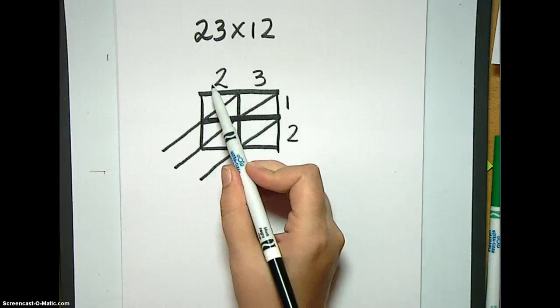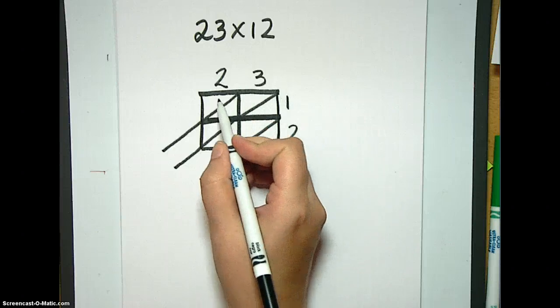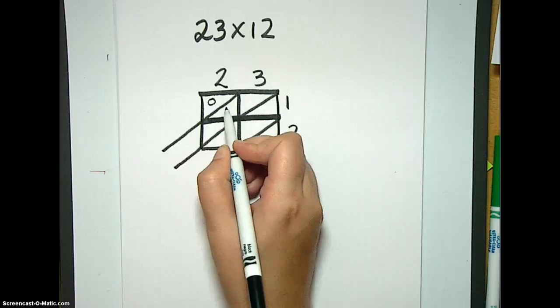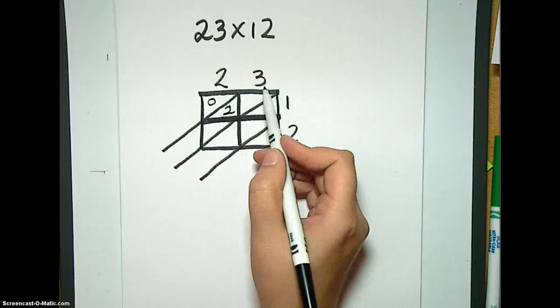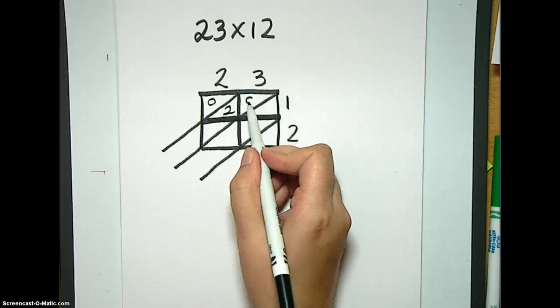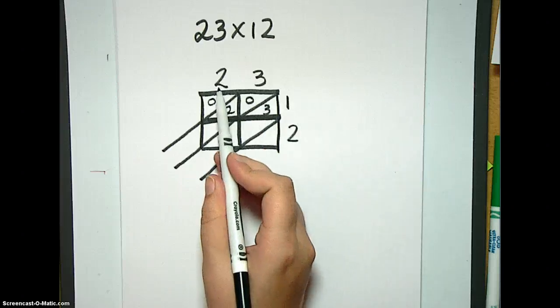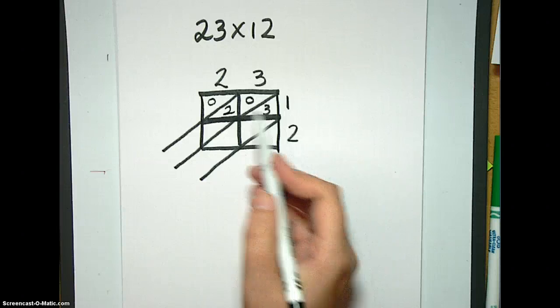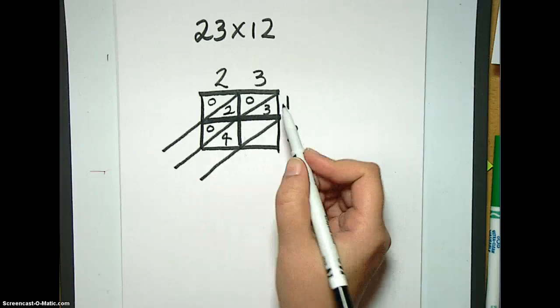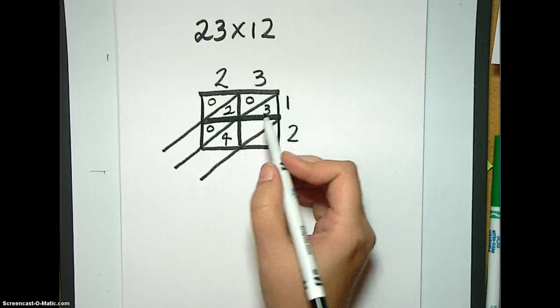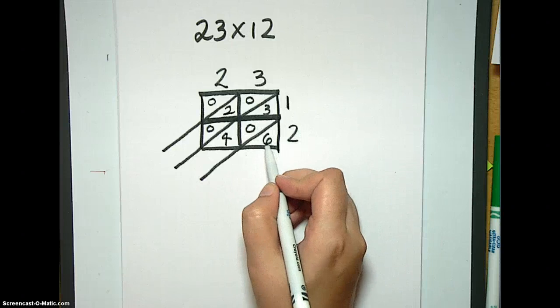So then I'm going to go in and just start multiplying and fill in the answers, and then we're going to use some colors to make it a little more clear. I'm going to start over here with our two, and we do two times one, which is two. So we put a zero in the first box and a two here. Three times one is three, so we put a zero here and a three here. Then we have two times two, which is four. So we get a zero here and a four here. And three times two, which is six, so we get a zero here and a six here.